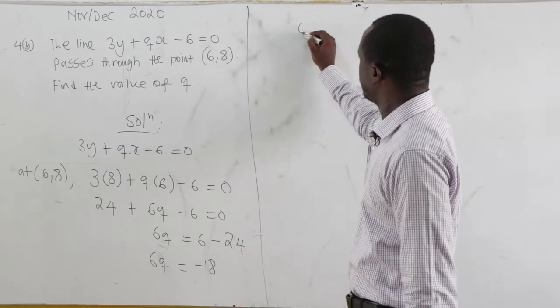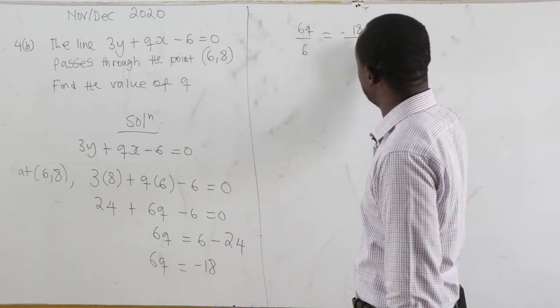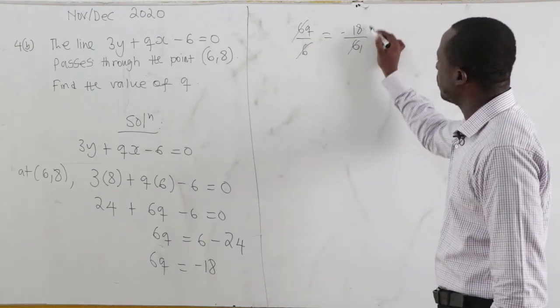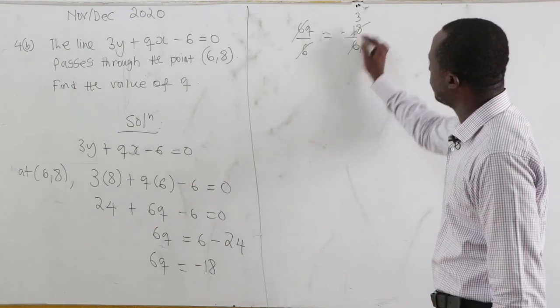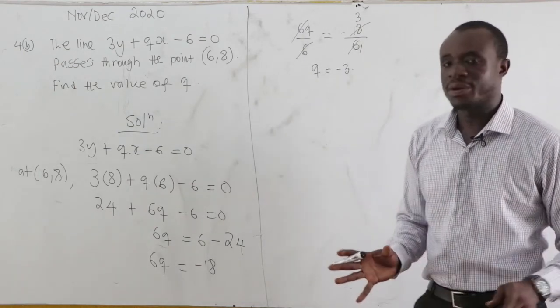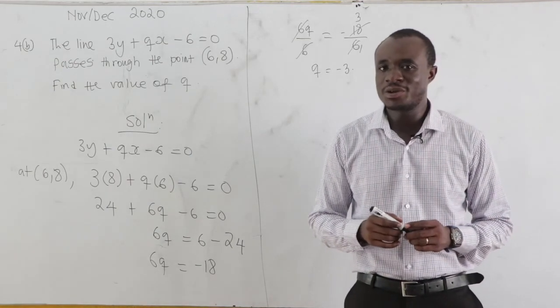Now we want to find q. So 6q divided by 6 equal to negative 18 divided by 6. This cancels out, and 18 divided by 6 is 3. So q equal to negative 3. Very easy. Don't forget to subscribe and share the videos also to your friends.